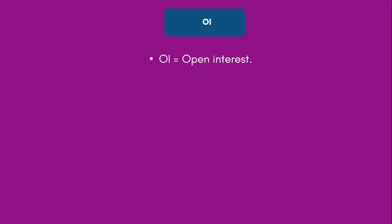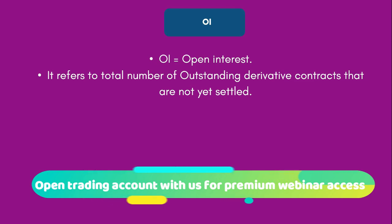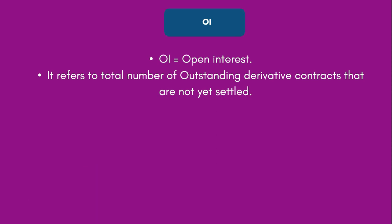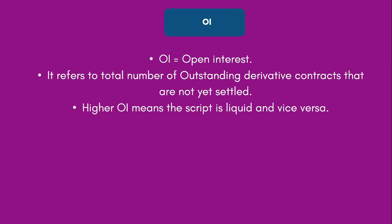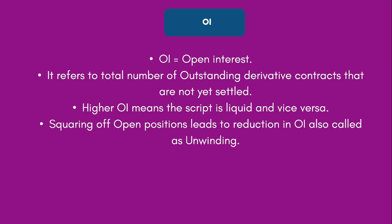The next topic is OI — open interest. Open interest means the total number of outstanding derivative contracts that are yet to be settled. That means at any point of time, how many contracts are open between two parties — a buyer and a seller. Higher OI means the script is liquid, as higher number of buyers and sellers are involved. Lower OI means there are fewer buyers and sellers and hence the script is less liquid. Squaring off an open position leads to reduction in OI and is also called unwinding.